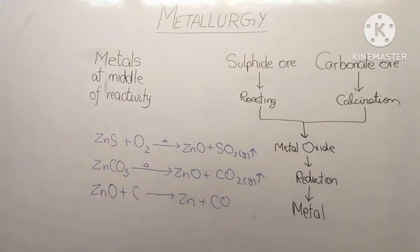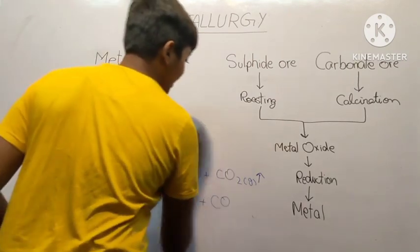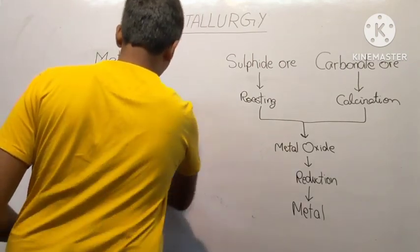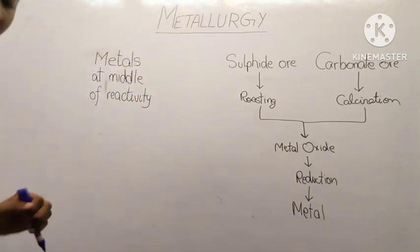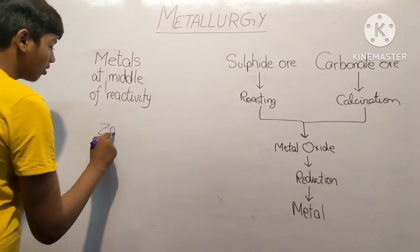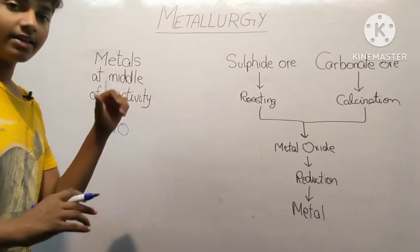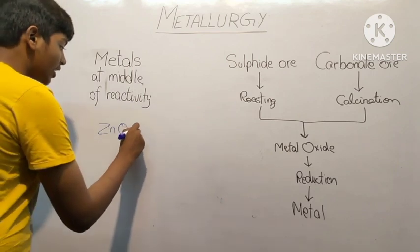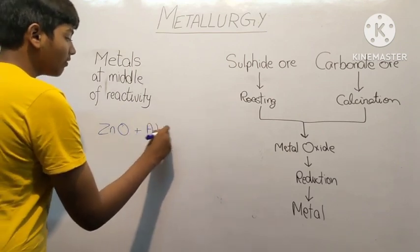The other one is a very important one which is the displacement reaction. With the help of displacement reaction, how we do it is that we have the ZnO, zinc oxide. We use a highly reactive metal such as aluminum.